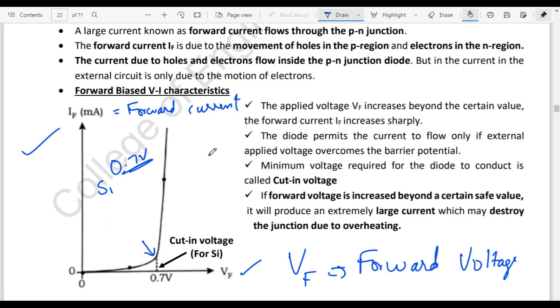Then current flows in diode in forward bias condition. Minimum voltage required for the diode to conduct is known as cut-in voltage.